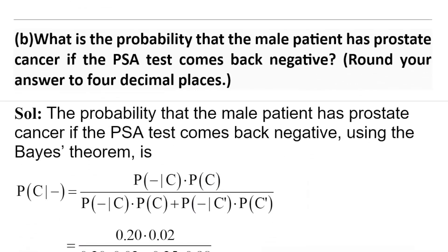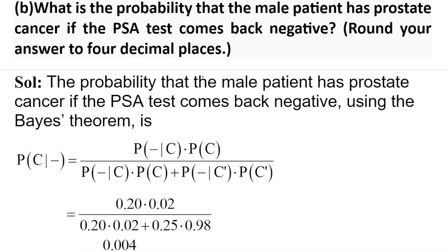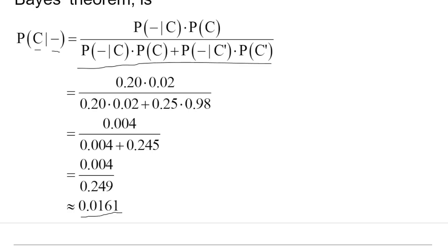Now let us come to Part B. Here we need to find the probability that a male patient has prostate cancer given that the test gives a negative result. We need to find the conditional probability that the patient has cancer given that the test gives a negative result. Again, using Bayes' theorem and putting values into the formula, we get 0.0161. So the probability that a male patient has prostate cancer if the test comes back negative is 0.0161.